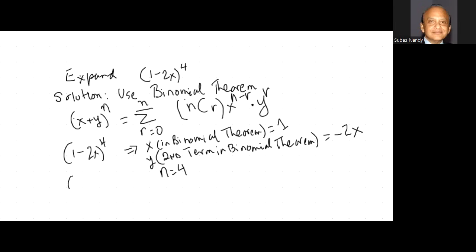Therefore, (1 - 2x) exponent 4, with n equal to 4 and r starting from 0: the first term is 4C0, that is 0 items taken from 4 combinations, multiplied by the first term raised to the power of n minus r, which is 4 minus 0, multiplied by y to the power of r, so minus 2x to the power of 0.